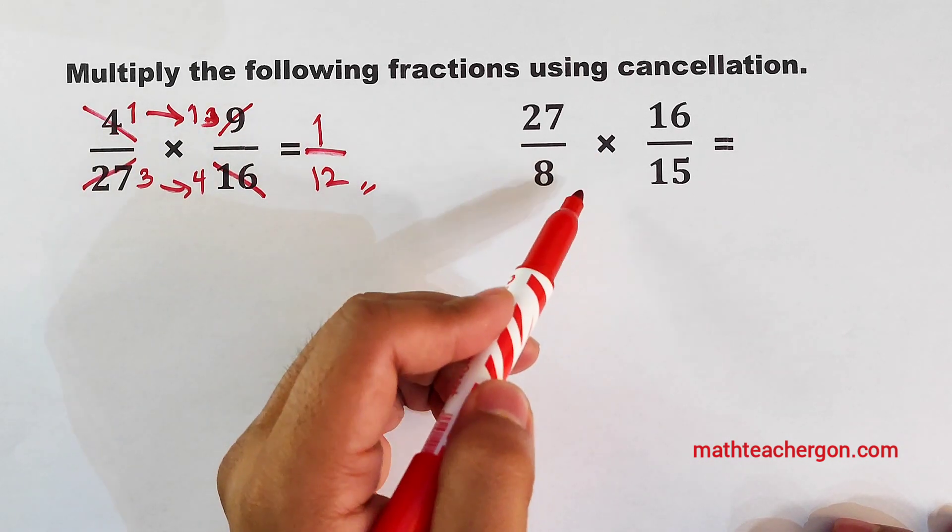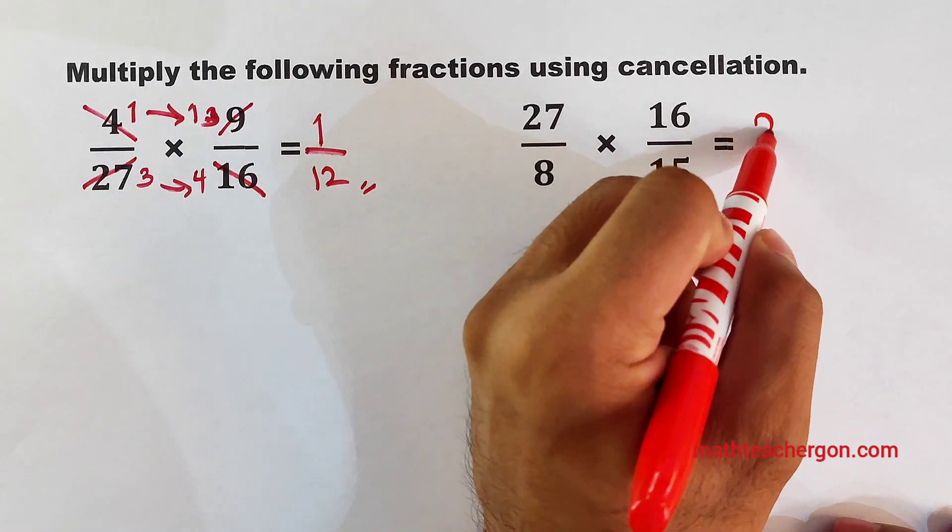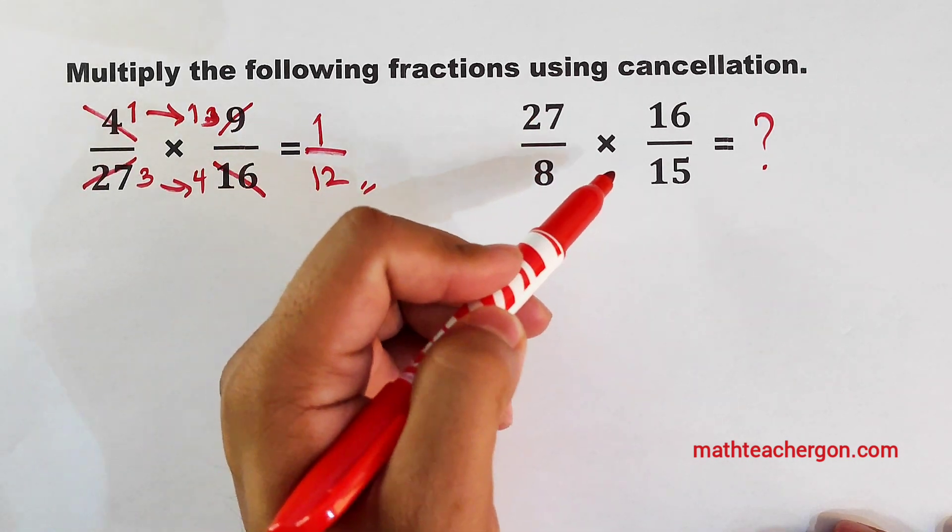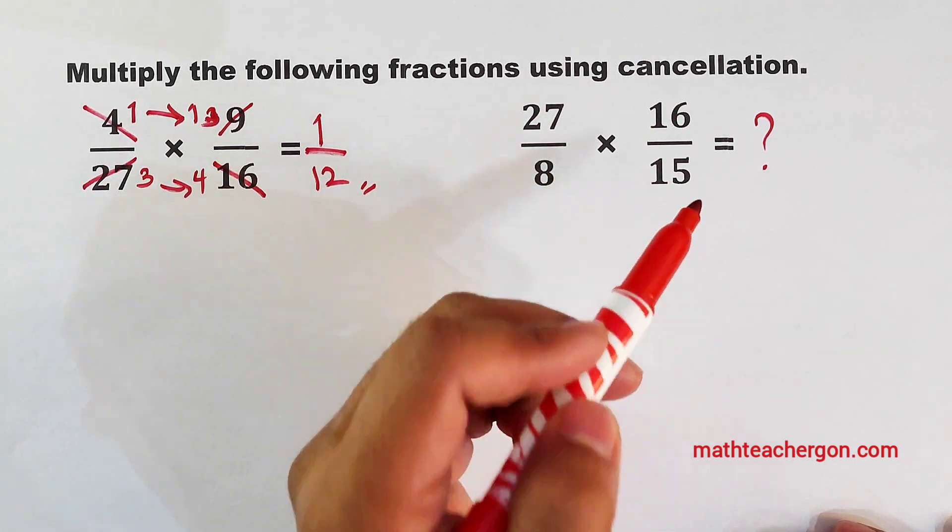Now, it's your turn to answer this problem. What do you think is the product between 27 over 8 times 16 over 15 by cancellation?